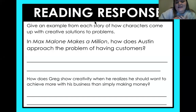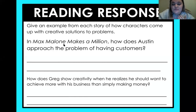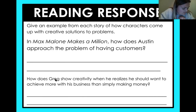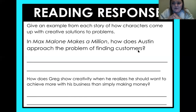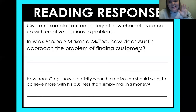Your reading response today: give an example from each story of how characters came up with creative solutions. In Max Malone Makes a Million, how does Austin approach the problem of finding customers? And how does Greg show creativity when he realizes he wants to achieve more with his business than simply making money? Alright, fourth graders, you did amazing today. We really dug deep, analyzed those characters, and compared them. Have a great rest of your day — thank you for working hard, and I'll see you next time. Bye!